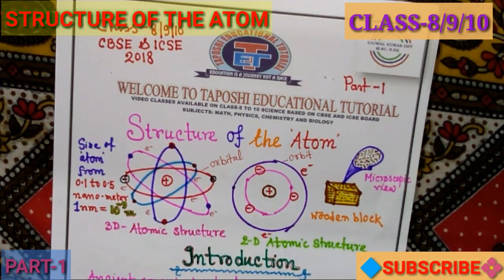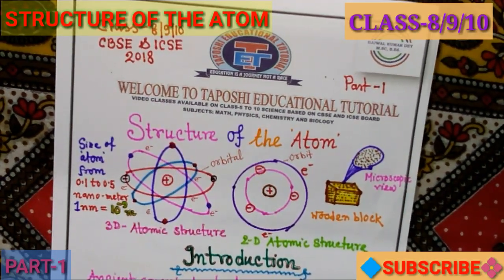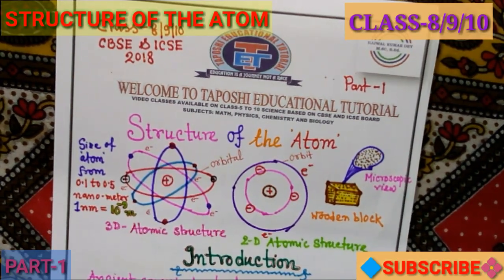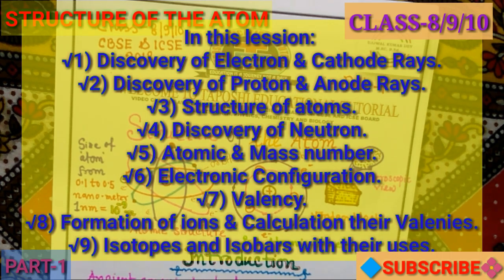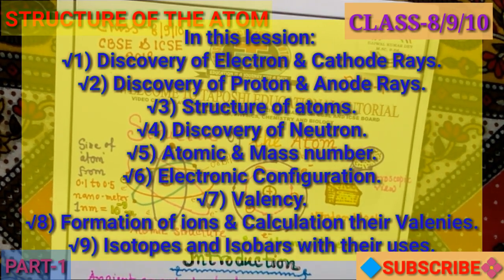Let us discuss atomic structure. In this lesson you will learn: (1) Discovery of the electron and cathode rays; (2) Discovery of protons and the anode rays; (3) Structure of atoms; (4) Discovery of neutrons; (5) Atomic number; (6) Mass number; (7) Electronic configuration; (8) Valency; (9) Formation of ions and calculation of their valences; (10) Isotopes, isobars, and their uses.